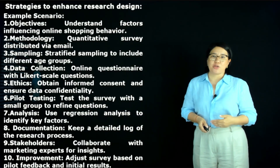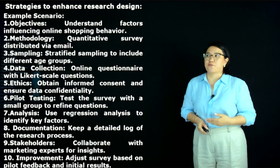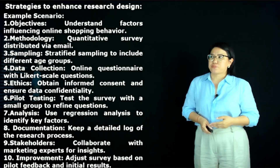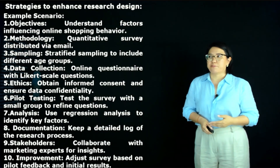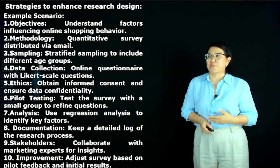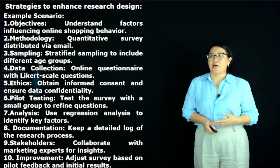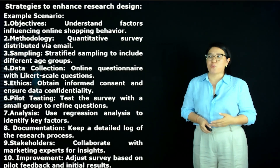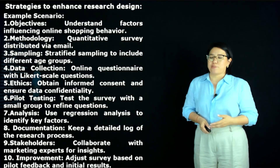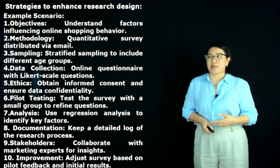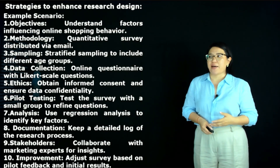In the example scenario: the objective is to understand factors influencing online shopping behavior. The methodology is a quantitative survey distributed via email. Sampling uses stratified sampling to include different age groups. Data collection uses an online questionnaire with Likert scale questions. Ethics involves obtaining informed consent and ensuring data confidentiality. Pilot testing involves testing the survey with a small group to refine questions. Analysis uses regression analysis to identify key factors. Documentation keeps a detailed log of the research process, and stakeholders collaborate with marketing experts for insights.